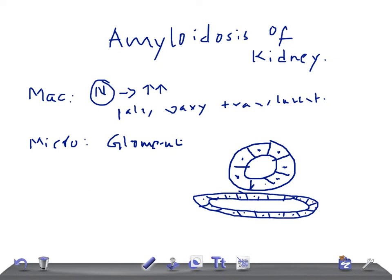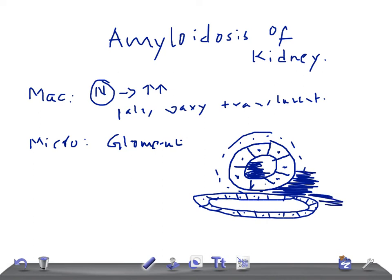Here you can see peritubular deposits. The amyloid deposits cause a pink color — they accumulate like this and cause narrowing of the lumina. They accumulate around the tubules; it should be pink in color but it's drawn in blue here.